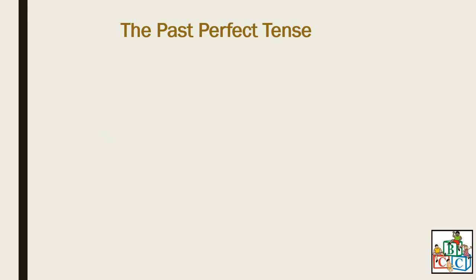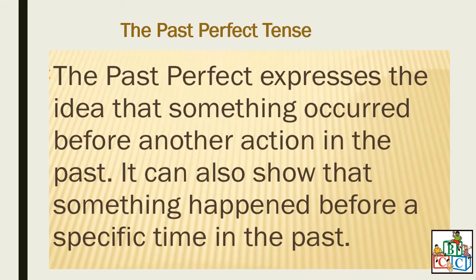The past perfect tense expresses the idea that something occurred before another action in the past. It can also show that something happened before a specific time in the past. So you have the past tense, and before that past tense, you have the past perfect tense. You are going to see some examples.